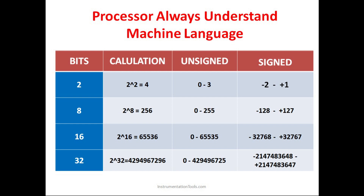A processor can always understand machine language. Data coming from sensors in the form of current or voltage — that is, 4 to 20 milliampere or 0 to 10 volt signals — must be converted into a form that the processor can understand. We are going to see how this data is converted into bits. First, integers can be categorized into two forms: signed and unsigned integers.